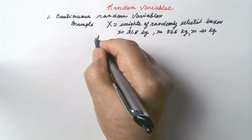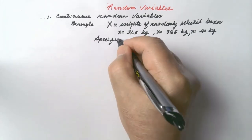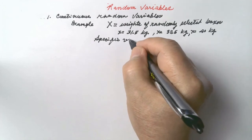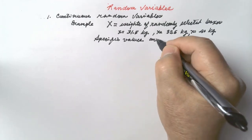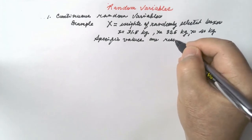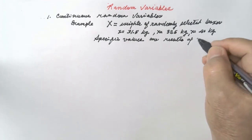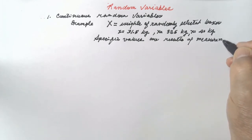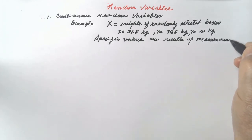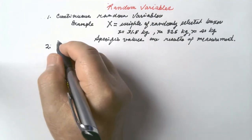These specific values are results of measurements. Let us write that. Now let us go to discrete random variables.